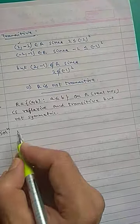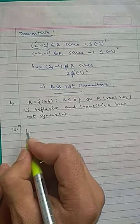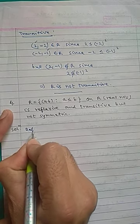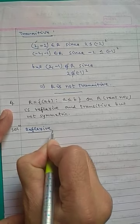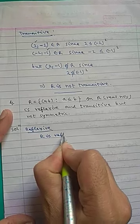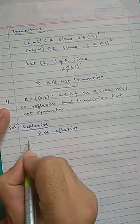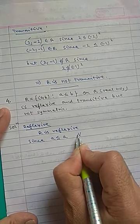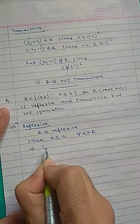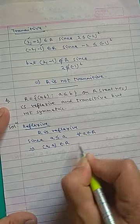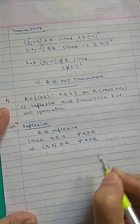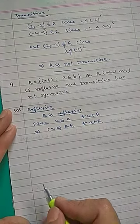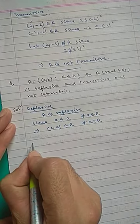We write: R is reflexive since a ≤ a for all a belonging to ℝ, which implies (a,a) belongs to R for all a belonging to ℝ.